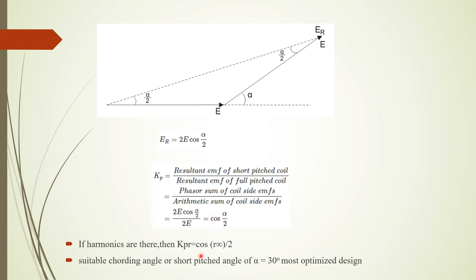If harmonics are present, the pitch factor equation becomes Kp_R = cos(R × alpha/2), where R represents the harmonic order — odd harmonics such as 3, 5, 7, 9, etc. An important point for technical exams is that the suitable value for alpha is 30 degrees, which is the value normally chosen for the construction of armature windings in alternators.